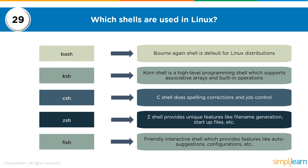The KSH (Korn Shell) is used for high-level programming and supports associative arrays and built-in operations. The CSH (C Shell) has features like spelling corrections and job controls. The ZSH (Z Shell) provides unique features like file generation and startup files. FISH (Friendly Interactive Shell) provides features like auto-suggestions and configuration. All these shells have different functionalities depending on the use case, with Bash being the most common in desktop Linux systems.